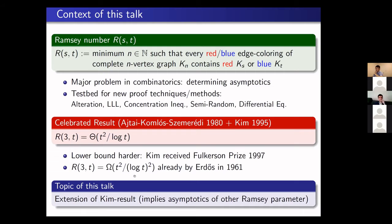Finally, in 1995, Kim managed to get the correct lower bound by removing the log factor. Kim combined a semi-random variation of the triangle-free process with concentration inequalities and differential equations. For this major achievement, Kim received the Fulkerson Prize in 1997. The topic of this talk is to introduce an extension of Kim's result, which implies asymptotics of some other Ramsey parameters, again by removing some log factor.